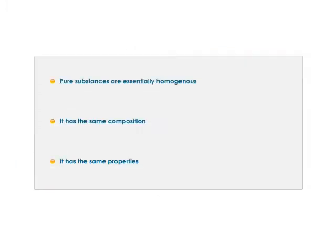Characteristics of a pure substance: pure substances are homogeneous. However, the converse is not true — all homogeneous substances are not pure substances. For example, a mixture of salt and water is homogeneous, but it is not a pure substance, as there may be impurities in the salt or water.